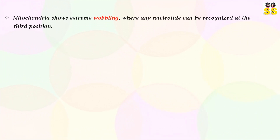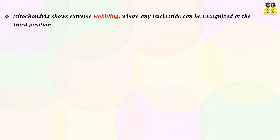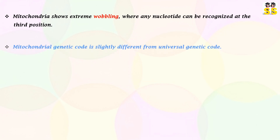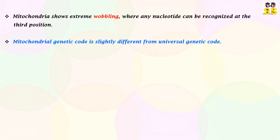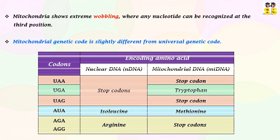Mitochondria show extreme wobbling, where any nucleotide can be recognized at the third codon position. The mitochondrial genetic code is slightly different from the universal genetic code, as displayed in the accompanying table comparing nuclear DNA and mitochondrial DNA.